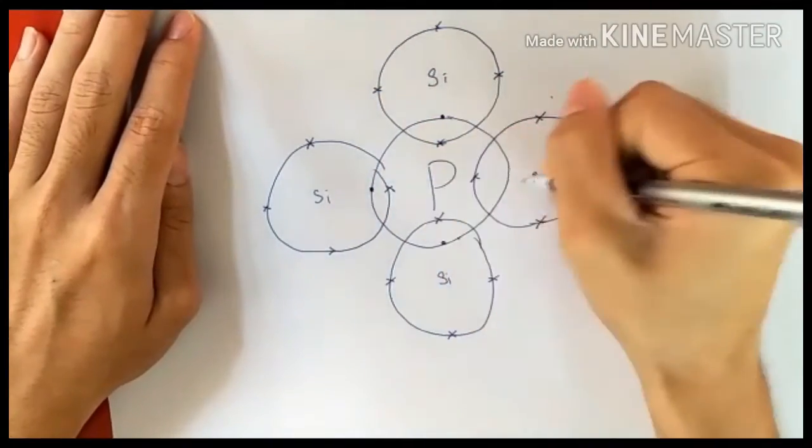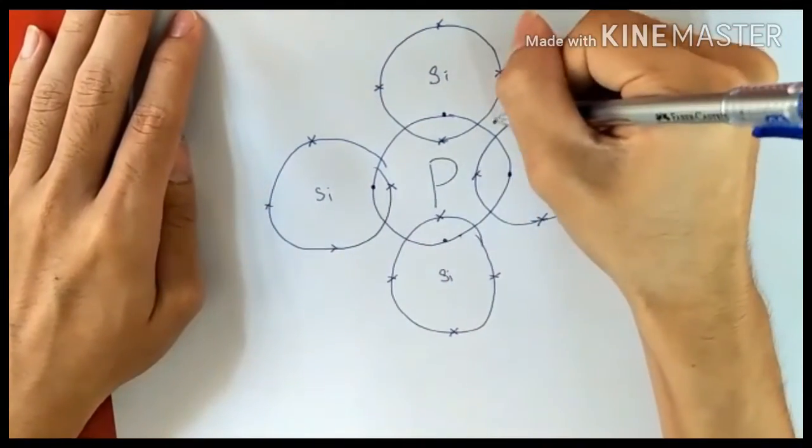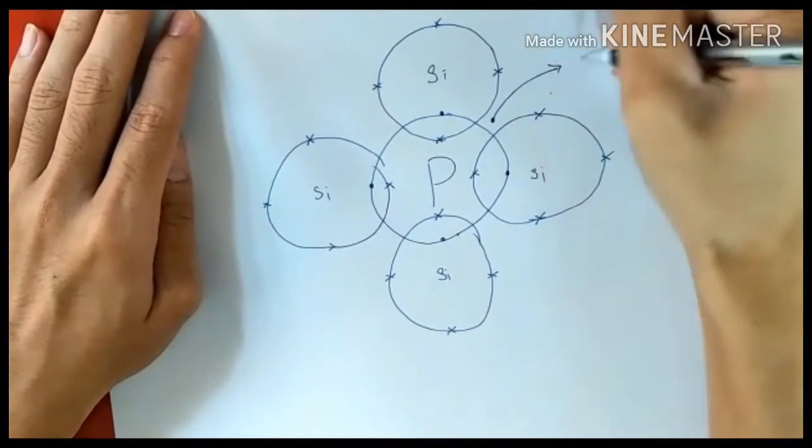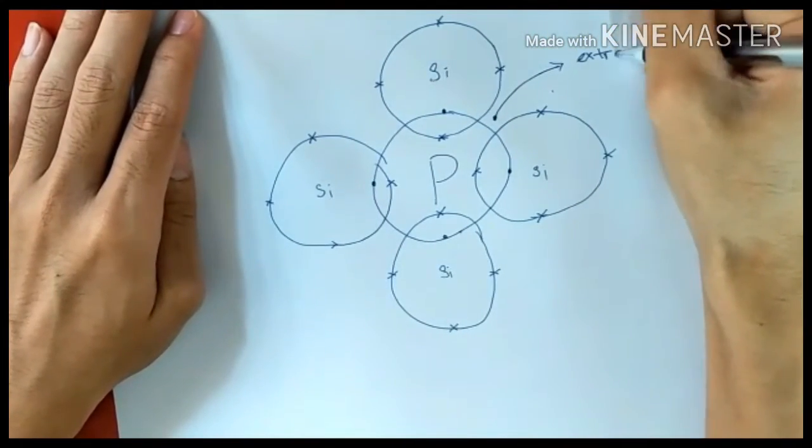We can conclude that in the N-type semiconductor, electrons are the majority carriers and the holes are the minority carriers.